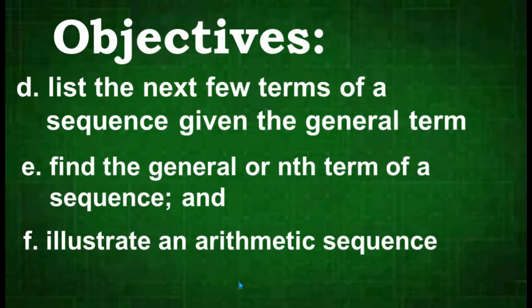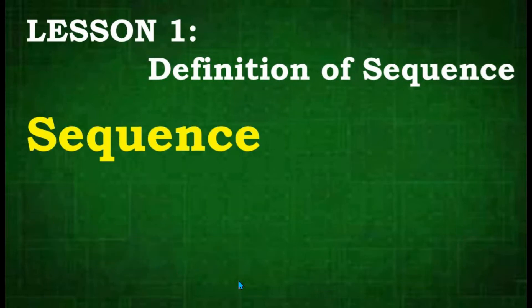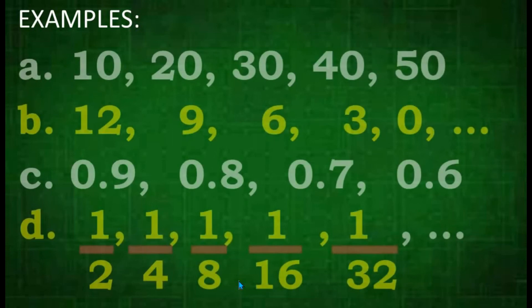Let's start with lesson 1, the definition of sequence. What do we mean by sequence? Sequence or progression is a set of numbers written in specific order. Here are some examples of sequence.